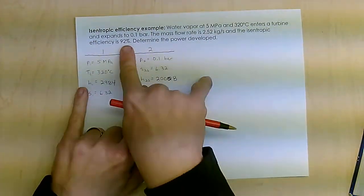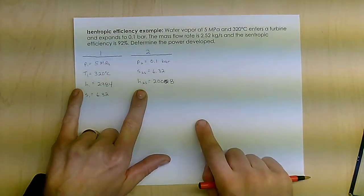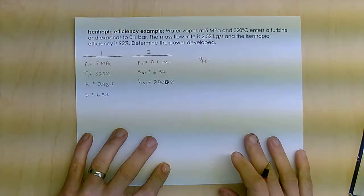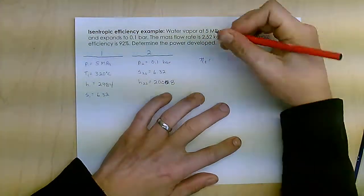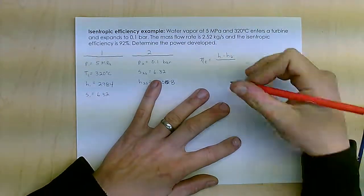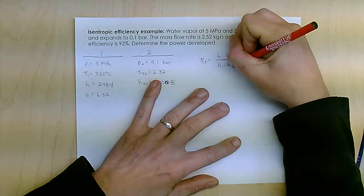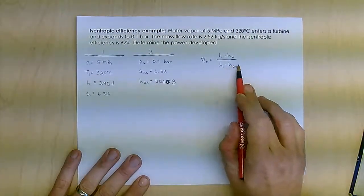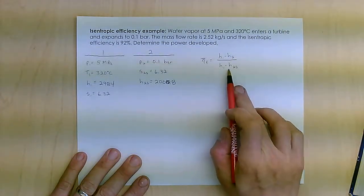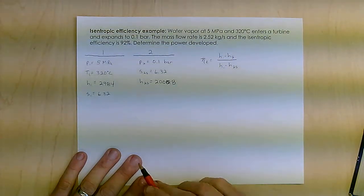Of course, it's not. It's only 92% of the best-case scenario. So that's where I'm going to use this equation. My isentropic turbine efficiency is H1 minus H2 all over H1 minus H2S. This is the best-case, and this is my actual case. I'm 92% of the best-case scenario.